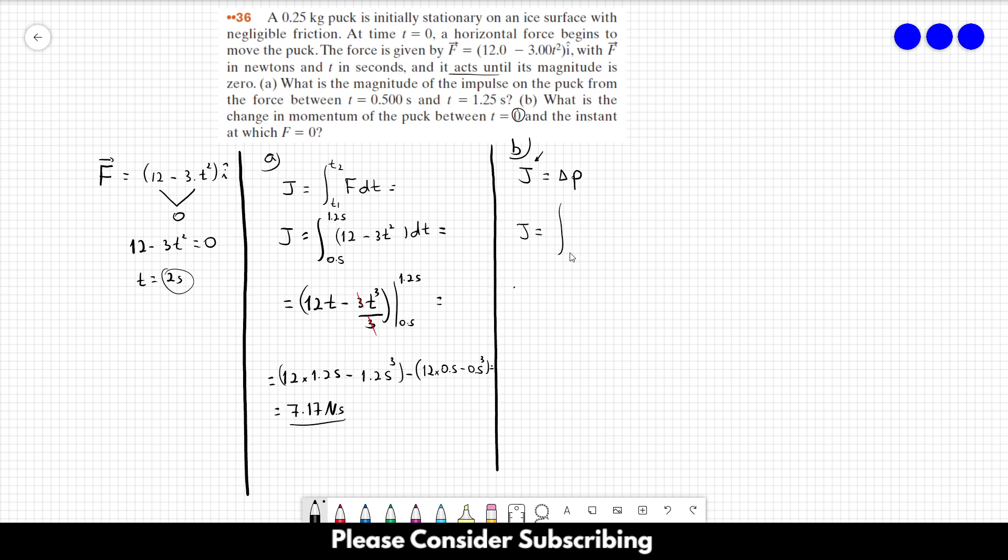The impulse is equal to the integral from 0 to 2 of 12 minus 3t squared dt. This gives us 12t minus t to the power of 3, evaluated from 0 to 2.